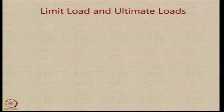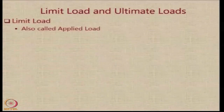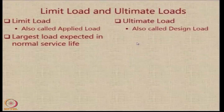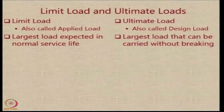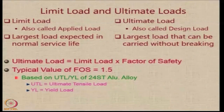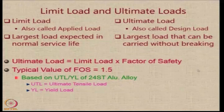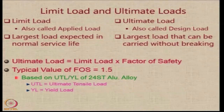We need to understand the difference between two important terms: the limit load and the ultimate load. The limit load, also called the applied load, is essentially the largest load that the aircraft component is expected to sustain during its normal service life. The ultimate load, or design load, is the largest load it can take without breaking. Between the two, we have the factor of safety: ultimate load equals factor of safety times the limit load. The typical factor of safety for aircraft is 1.5, a value derived from the ratio of the ultimate tensile load to the yield load of standard aluminum alloy used in aircraft.